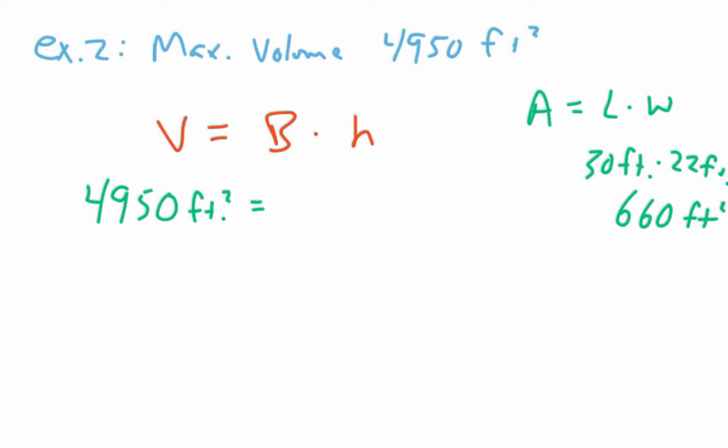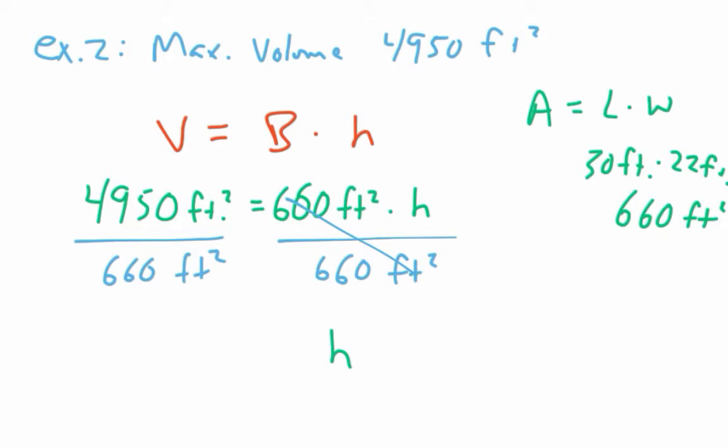So if I wanted to use this red equation here instead of the volume equals length times width times height, I could say the area of my base is going to be 660 square feet times this unknown height. How shallow do I need to make it be in order for them to not slap me with penalties and tell me I need to fill in some depth in my house? Okay, so then I want to get h by itself, so I'm going to divide by 660 square feet. And when I do that, I come up with a height of 7.5.